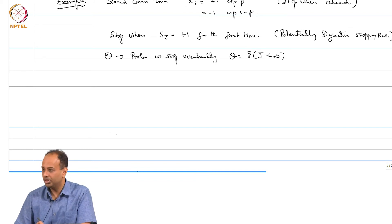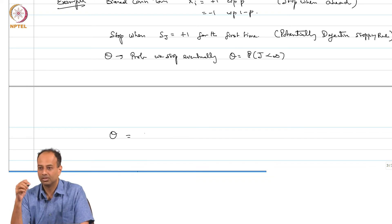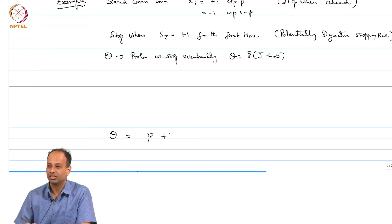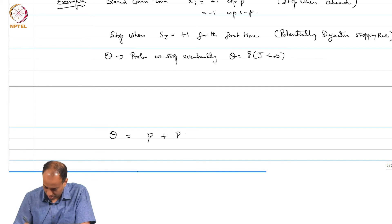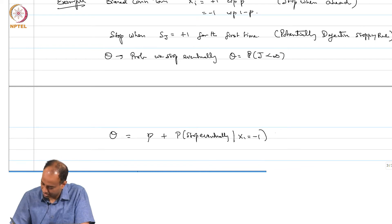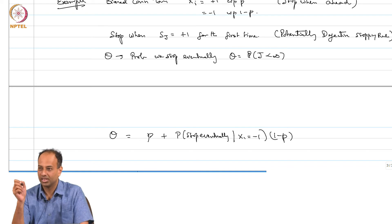Using the total probability rule, I can write the probability of stopping eventually as: the probability of stopping in the first trial itself (given x_1 = +1) is 1, times probability p; plus the probability given x_1 = minus 1, times probability 1 minus p. So theta equals p plus (probability of stopping eventually given x_1 = minus 1) times (1 minus p).